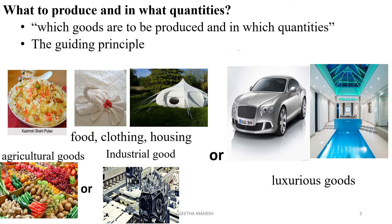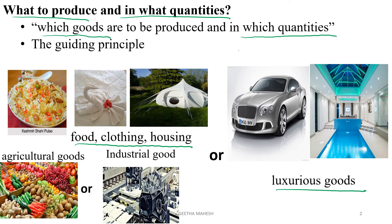The first basic problem of an economy is what to produce and in what quantities. It has two dimensions. The economy has to decide which goods are to be produced and in which quantities — whether to produce basic necessities like food, clothing, and housing, or to produce luxurious goods; whether to produce agricultural goods or industrial goods; whether to produce consumer goods or producer goods. The basic guiding principle of every economy is allocation of resources in such a way that it gives maximum satisfaction to the economy.